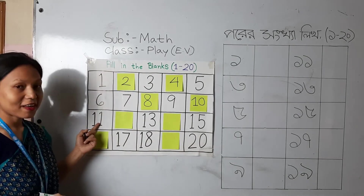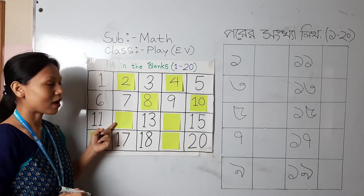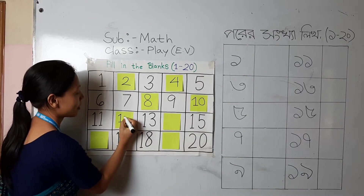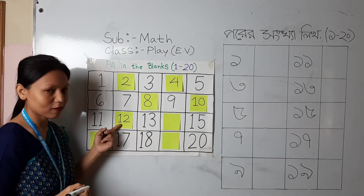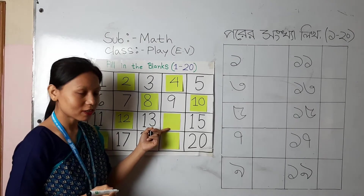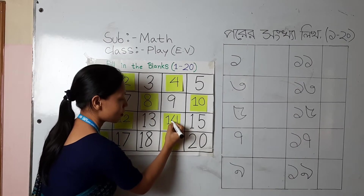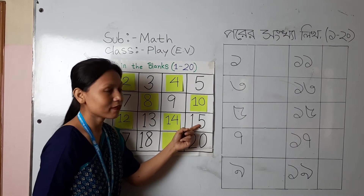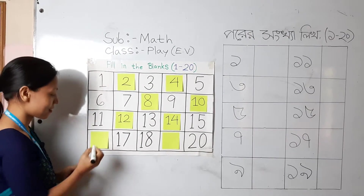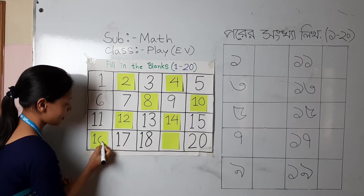Then eleven — one, one, eleven. Twelve is missing, so one, two — twelve. Write one and two — twelve. Then number thirteen — one, three, thirteen. Then number fourteen — one, four, fourteen. Then one, five — fifteen. Which number is missing? Sixteen. One, six — sixteen.